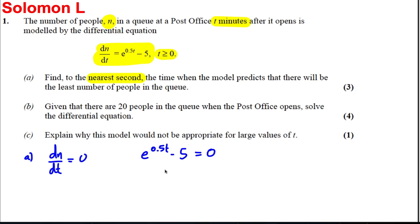So what we're solving is e to the 0.5t minus 5 equals 0. Add 5 to both sides, e to the 0.5t equals 5. Take natural log of both sides, so 0.5t equals ln 5. Then double both sides, t is therefore equal to 2 ln 5.